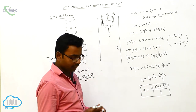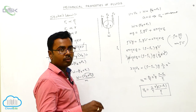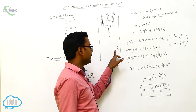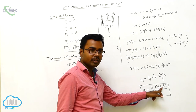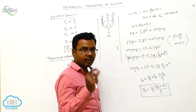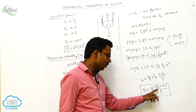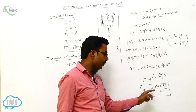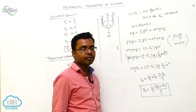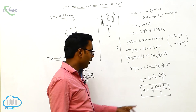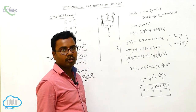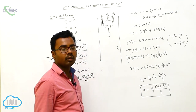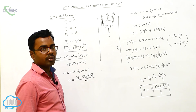This formula is also applicable for the terminal velocity of raindrops falling in the atmosphere, where rho_L is the density of the atmosphere, rho is the density of water, R is the radius of the water droplet, g is acceleration due to gravity, and eta is the coefficient of viscosity of the atmosphere.